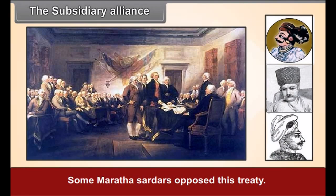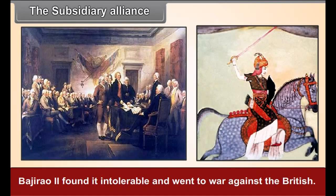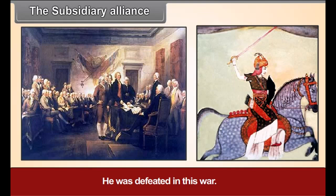Some Maratha Sardars opposed this treaty, which led to the Second Anglo-Maratha War. British interference in the Maratha State increased after their victory in this war. Bajirao II found it intolerable and went to war against the British, but was defeated and surrendered to the British in 1818.